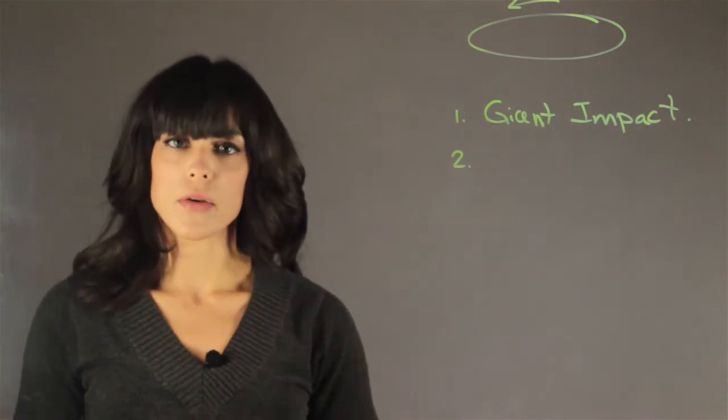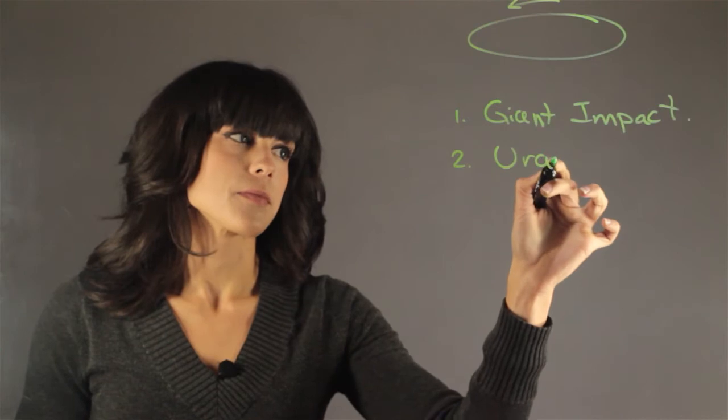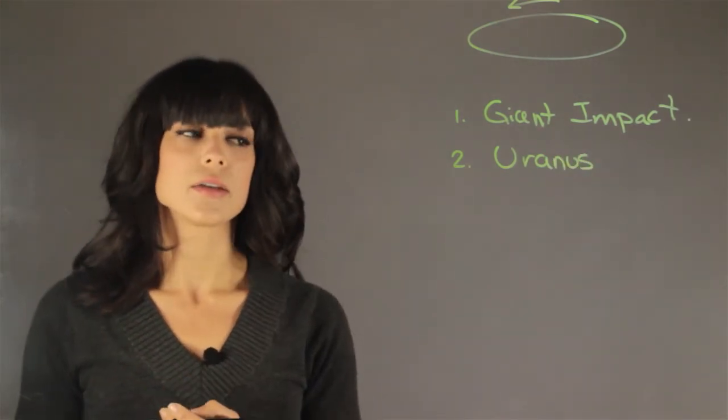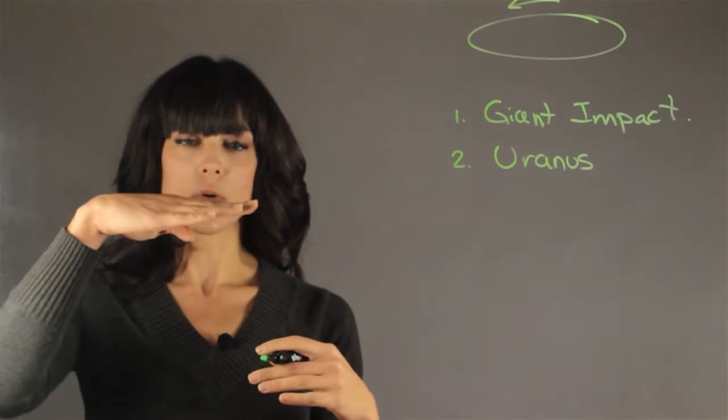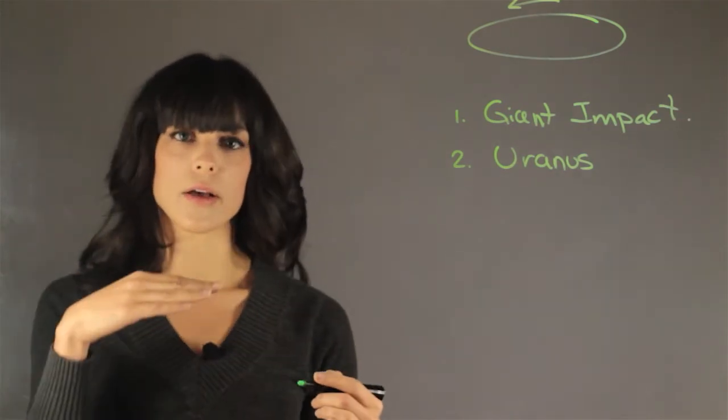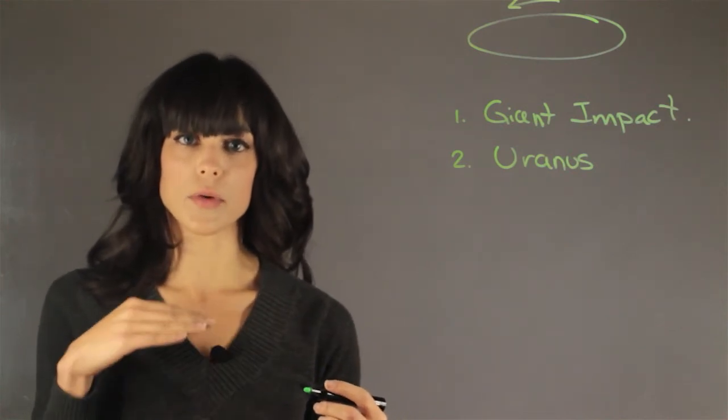The second thing that we can tell, which is a big collision, is Uranus. Uranus is actually rolling on its side. So most planets have their equator lined up with the orbital plane, and Uranus isn't. Uranus is actually 98 degrees away from the orbital plane.